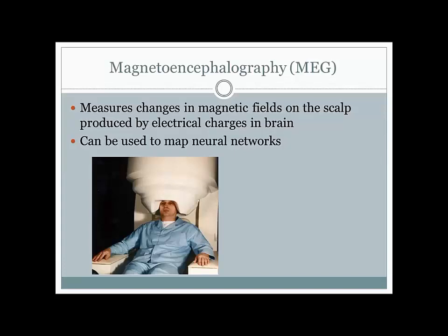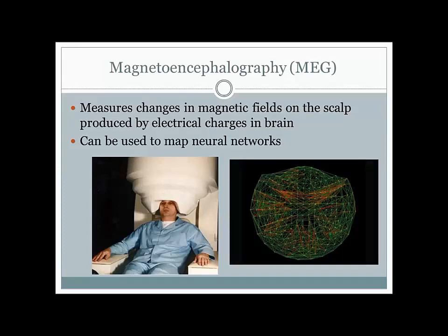When we talk about memory and how it works next week, I'll come back to this concept of neural networks in terms of how memories are stored. What we can start to generate are outputs that show connections in your neural network—as one neuron fires, it traces the action potential down the axon to the next neuron, and then from there to the next, and so on, until you can come up with these really complex maps of how the brain is working.